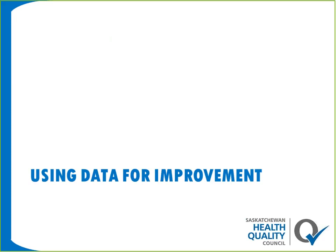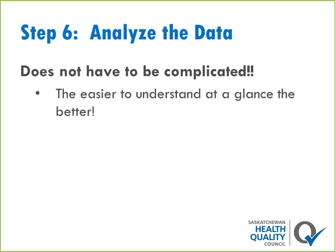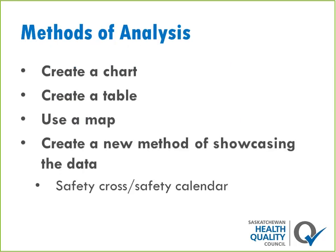We're on to the third and final section: using data for improvement. There are only three steps left — we're on step six of eight. For lots of people this can be the most difficult step, but it doesn't have to be complicated. The easier it is to understand and present the data, the better. There are lots of different things you can do to analyze data: create a chart, create a table, use a map. Maps are great for hot-spotting or root cause analysis — for example, if you're working in a primary care clinic looking at falls, you could map where every fall happened and perhaps see a pattern.